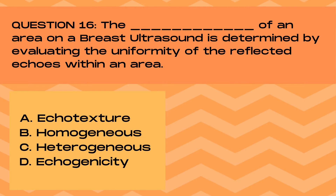Question 16. The blank of an area on a breast ultrasound is determined by evaluating the uniformity of the reflected echoes within an area. A. Echotexture, B. Homogenous, C. Heterogeneous, or D. Echogenicity. And the answer is A. Echotexture. The echo texture of a mass on ultrasound is determined by looking at the uniformity of the reflected echoes within an area. If all the echoes have the same brightness level, it's known as homogenous. If the mass has varying levels of brightness, it's known as heterogeneous. Uniform echoes or homogenous is a benign finding, while uneven patterns known as heterogeneous is a more worrisome sign in breast ultrasound.